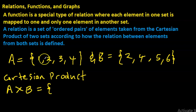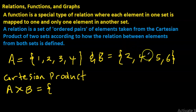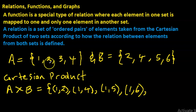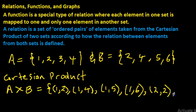Here's how we get the Cartesian product of A times B. It's like expanding brackets — you take one term and apply it to each element. So one pairs with two, one pairs with four, one pairs with five, one pairs with six. Then you take two and pair it with each element: two pairs with two, two pairs with four, two pairs with five, and two pairs with six.